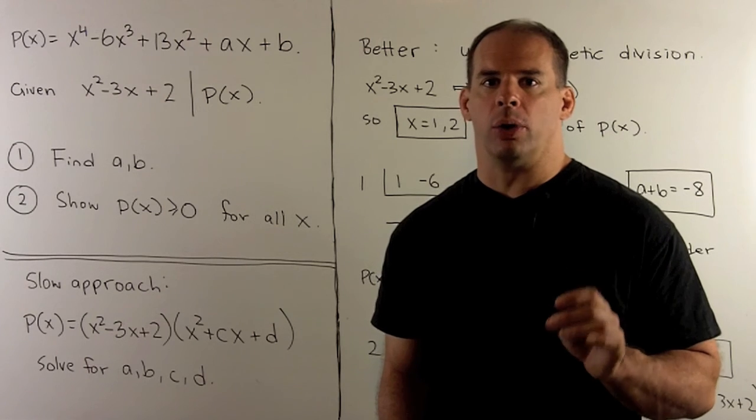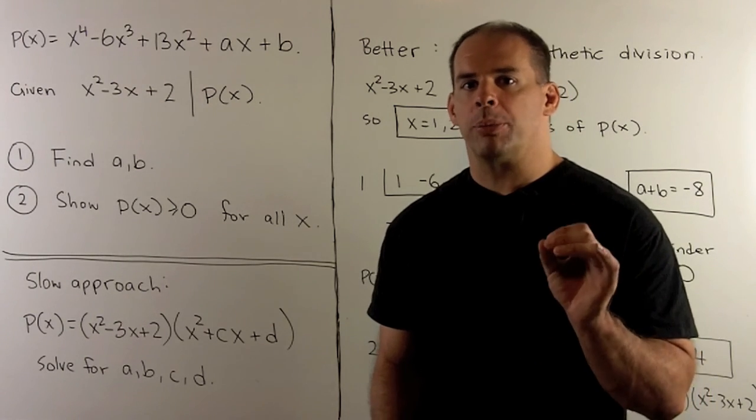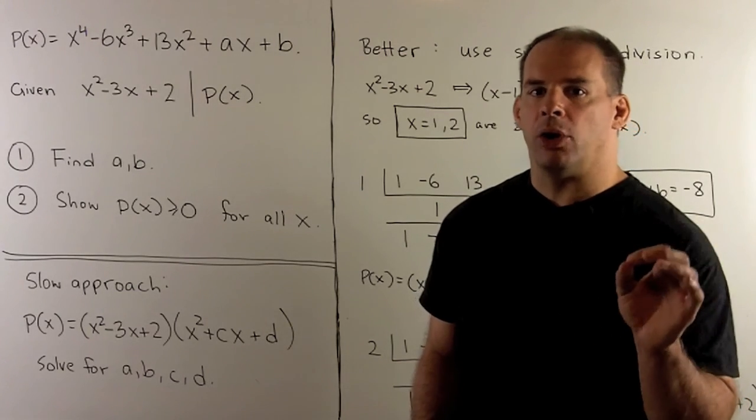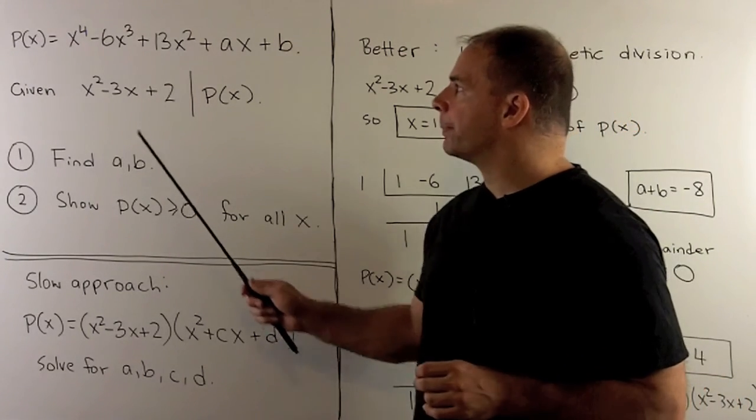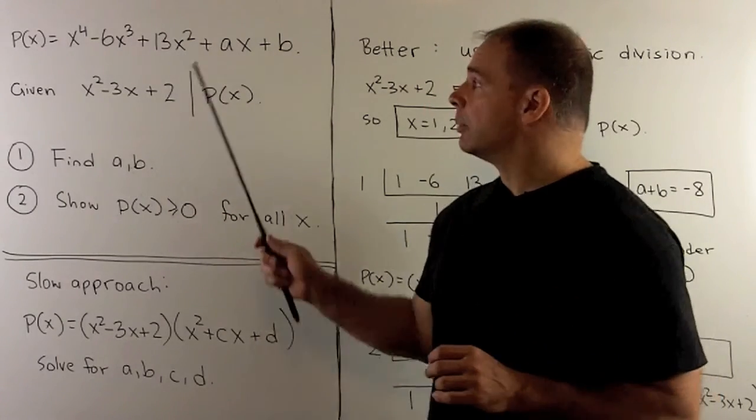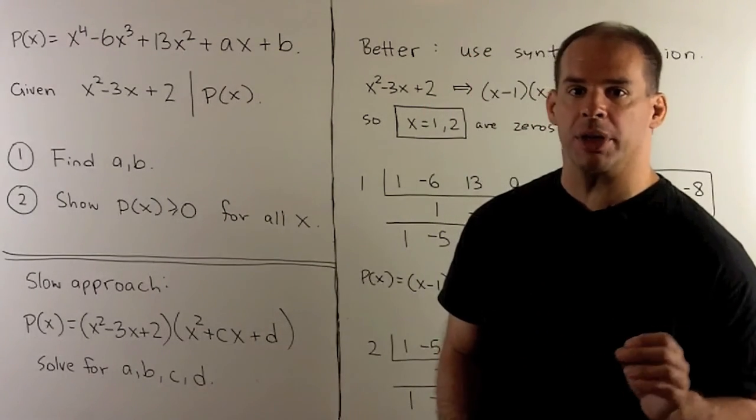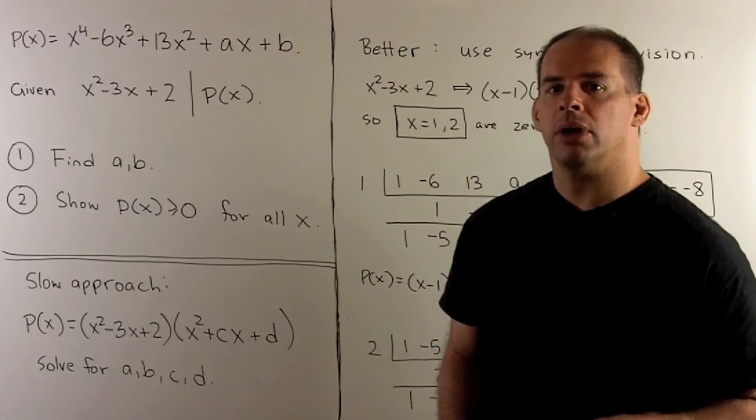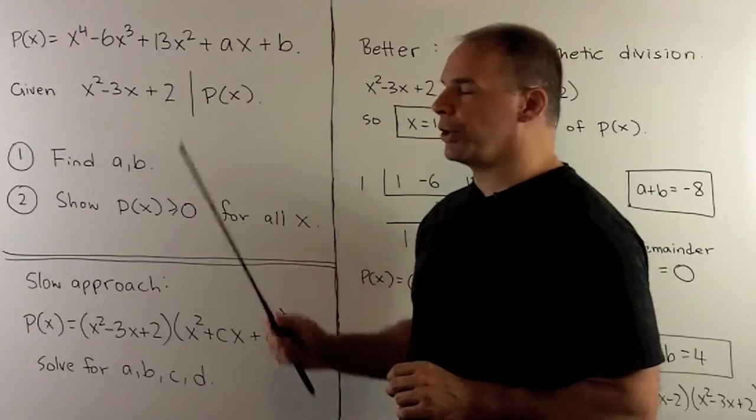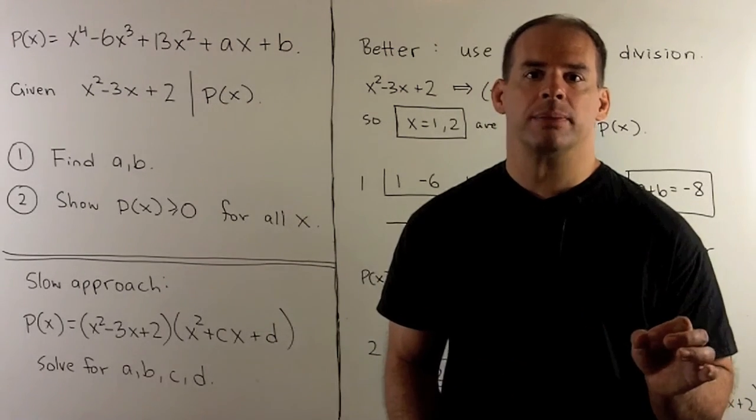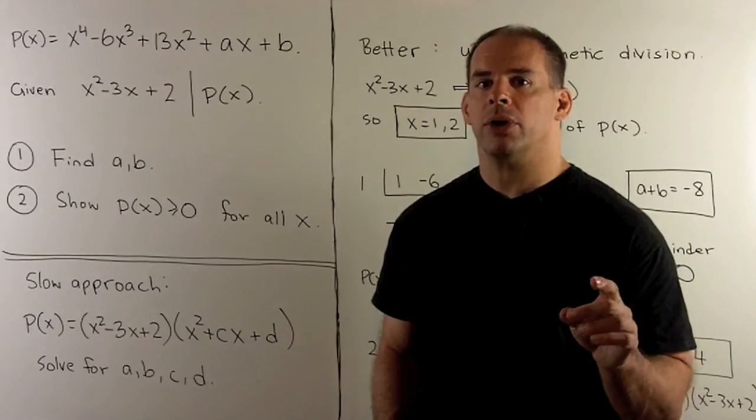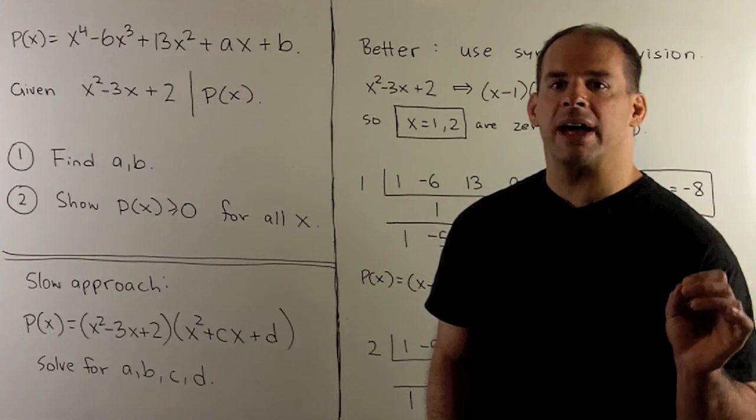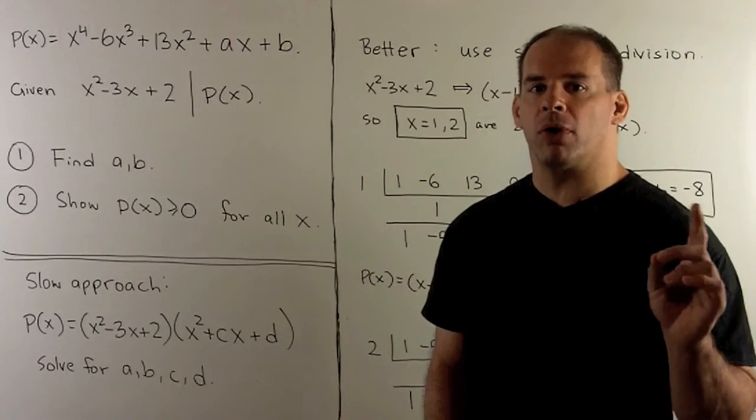Here's a problem on factorization of polynomials. We'll have three approaches, and we'll do the work for two. We have the polynomial P of X given by X to the fourth minus 6X cubed plus 13X squared plus AX plus B. A and B are unknowns to be found. We're given that X squared minus 3X plus 2 divides P of X. First, I want to find A and B. Then, we want to show that P of X is greater than or equal to 0 for all X.